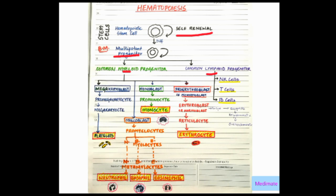The common lymphoid progenitor gives rise to natural killer cells, T lymphocytes, and B lymphocytes.